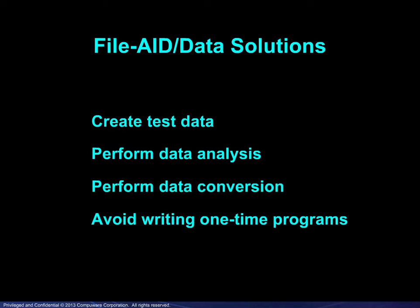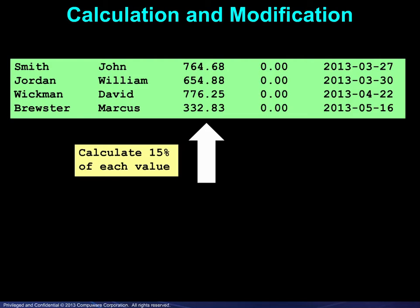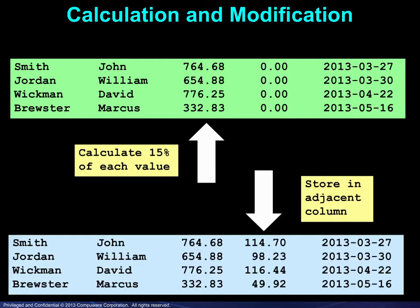Let's look at some common examples. Mathematical calculations may be done on data fields, followed by storing the results in another field. Here we have calculated 15% of each value in a column and stored the value in the adjacent column on the same row.